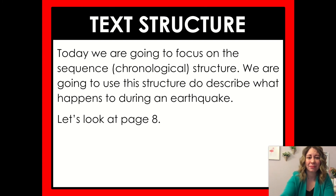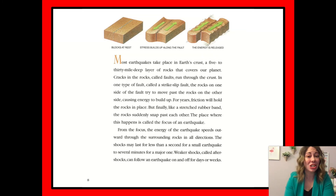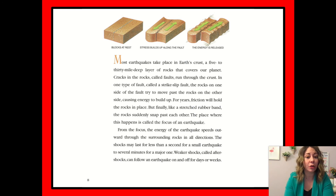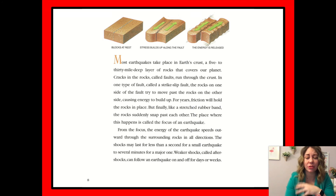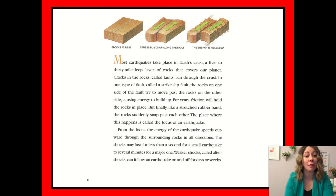On page 8, the text describes what happens during an earthquake: 'Most earthquakes take place in Earth's crust, a 5 to 30 mile deep layer of rocks that covers our planet. Cracks in the rocks, called faults, run through the crust. In one type of fault, called a strike-slip fault, the rocks on one side of the fault try to move past the rocks on the other side, causing energy to build up.' So it's starting to tell us what's happening. Then: 'For years, friction holds the rocks in place. But finally' — and that word 'finally' is a hint this is a sequence structure — 'like a stretched rubber band, the rocks suddenly snap past each other,' and that place is called the focus.